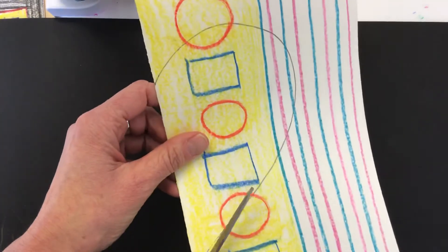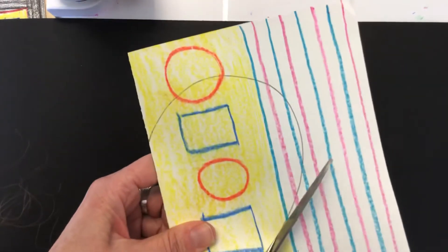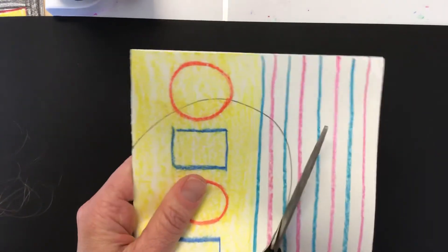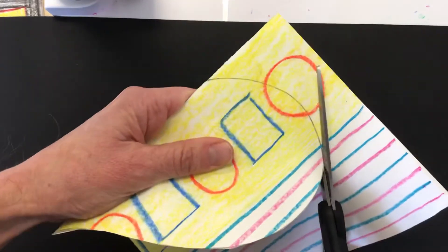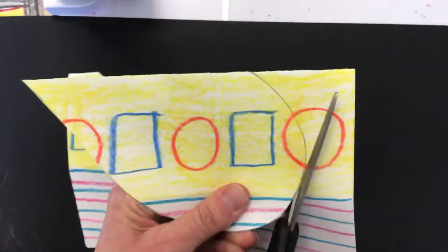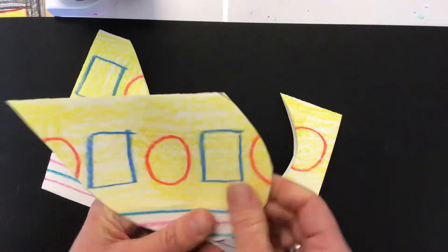Now I'm going to take my scissors and cut along that line as best I can. Go slow and use your other hand to help you with the cutting.